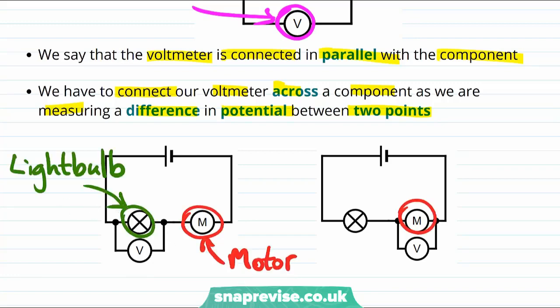If we want to know the potential difference across the light bulb we have to connect the voltmeter in parallel with the light bulb. But if we want to know the potential difference across the motor we need to attach the voltmeter in parallel with the motor.